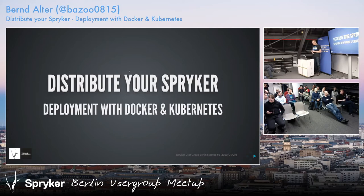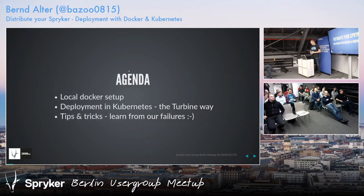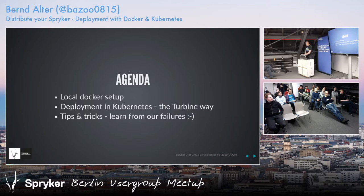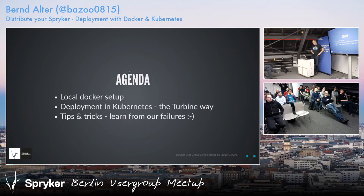I want to talk about setting up Spryker with Docker and deploying it with Kubernetes. The agenda covers the local Docker setup as we do it, in comparison to the Spryker setup, then deployment in Kubernetes, and later I'll share some tips and tricks and some failures we had while developing all of this.